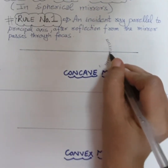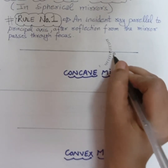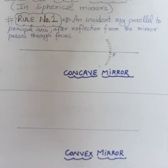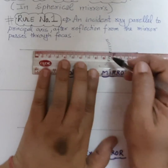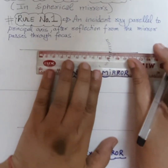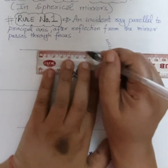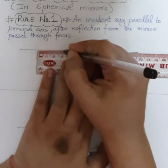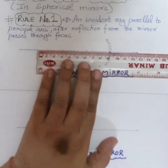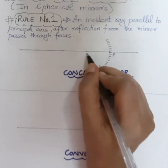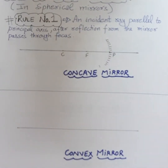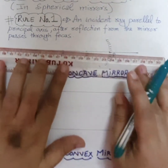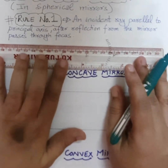This centre of the mirror is labelled as P, that is the pole of the mirror. Then use a scale and measure 3 centimetres from the pole, mark this point, then 3 centimetres further, mark one more point. So this is the pole, this is F that is focus, and this is capital C that is centre of curvature for a concave mirror. Now draw one parallel ray to the principal axis using a scale.